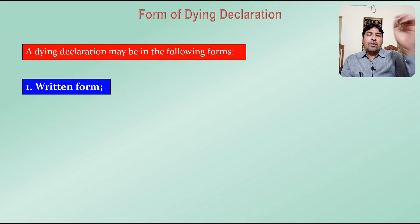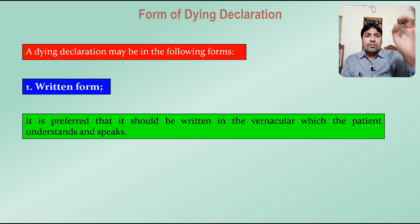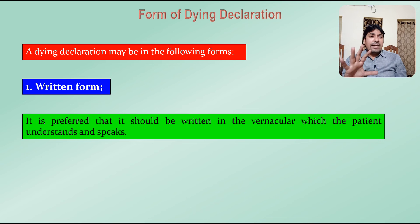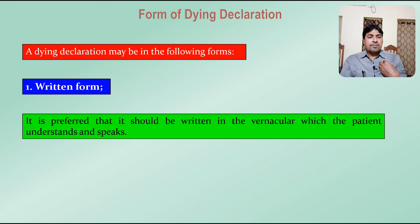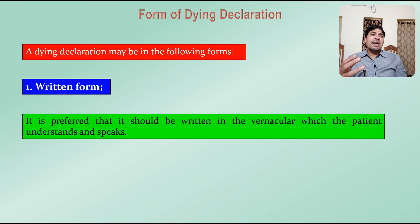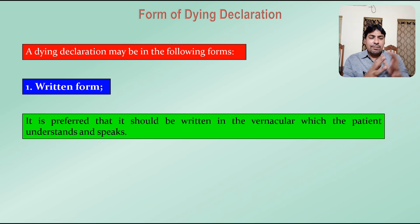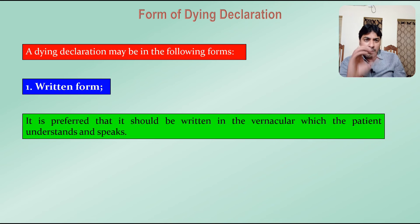A dying declaration may be in the following forms. The first is written form. It is preferred that it should be written in the vernacular which the patient understands and speaks best. If the patient understands Hindi, the dying declaration must be written in Hindi. If the patient understands Marathi, it must be in Marathi. If Tamil or Telugu, then in that language. The dying declaration should be written in the language the victim understands.